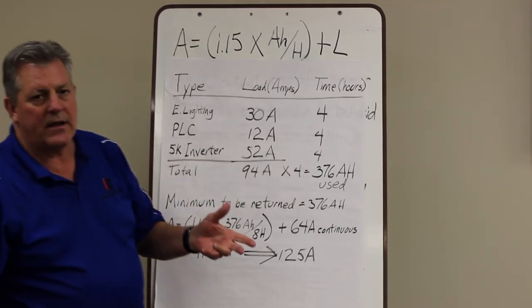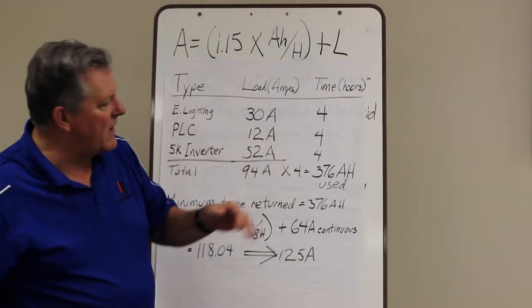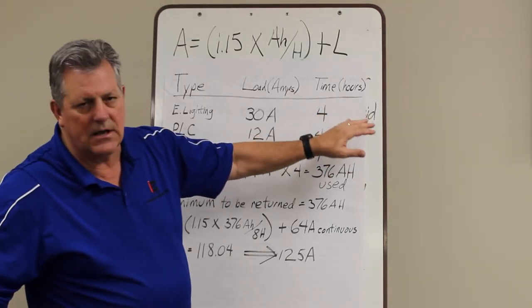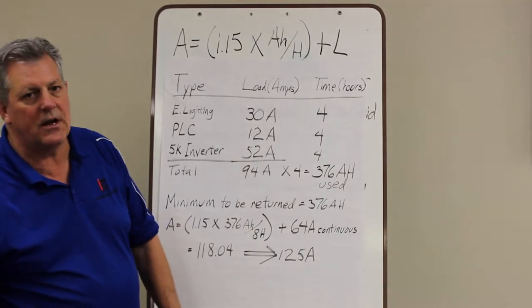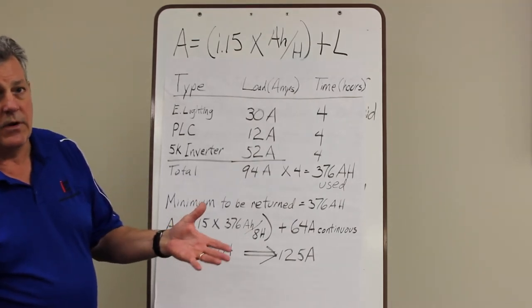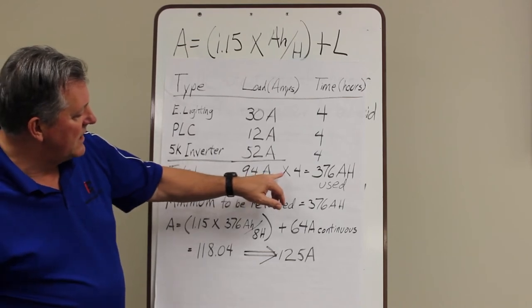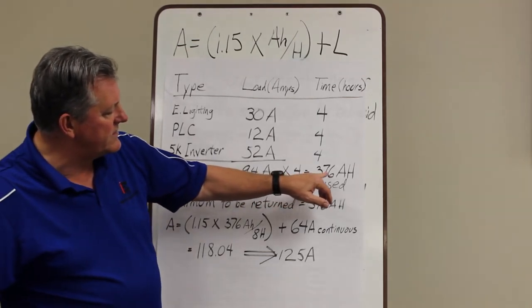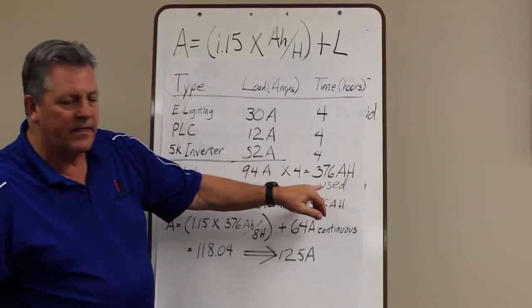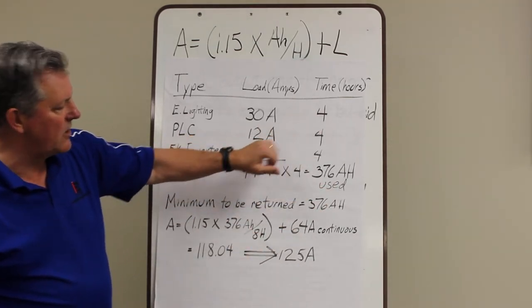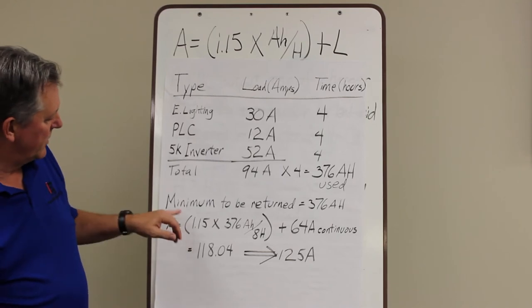Now if you go back and you're trying to size the battery you might have to look at this or if it's a step load profile you'd have to look at this in minutes. We're going to get through this thing quickly. So the total is 94 amps for 4 hours which is 376 amp hours. That's the amount of amp hours used to keep this load running for 4 hours. Pretty simple.